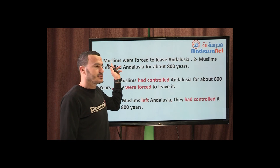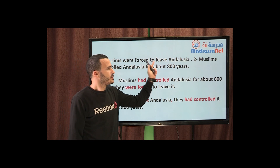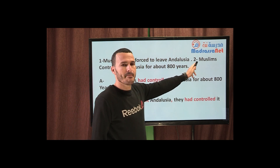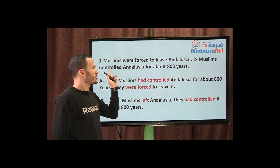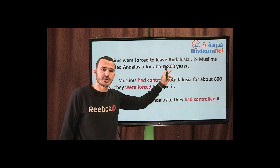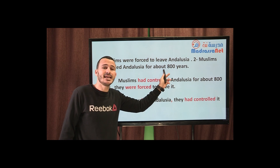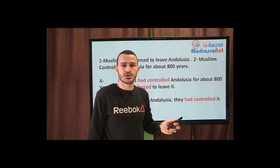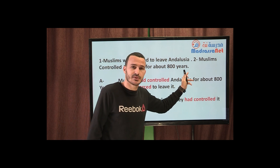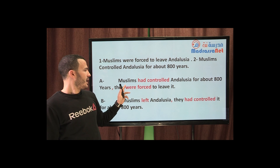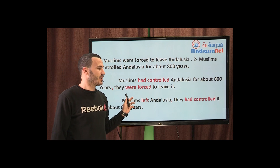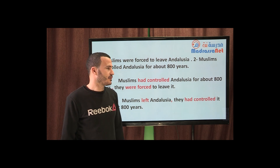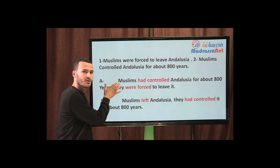Now a second example. Event number one: Muslims were forced to leave Andalusia. Event number two: Muslims controlled Andalusia for about 800 years — meaning Andalusia was under Muslim control for about 800 years. I'm going to use conjunctions — either 'after' or 'before' — but be careful: I'm using them right at the beginning of each sentence.